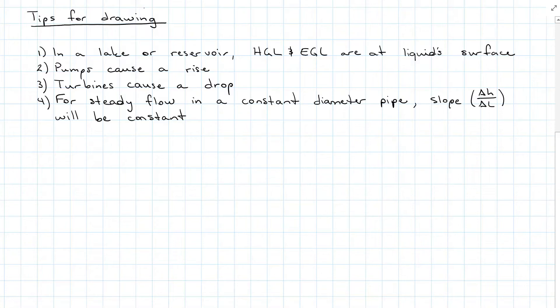For steady flow in a constant diameter pipe, the slope, which is the change in head over the change in length, will be constant.